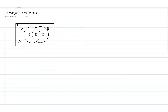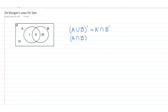DeMorgan's Laws for Sets state: first, that the complement of A union B is the same as taking the complement of A and intersecting it with the complement of B. Similarly, if you take the complement of A intersect B, that's the same as the union of the complement of A and the complement of B. In this video we're going to analyze this using a Venn diagram.